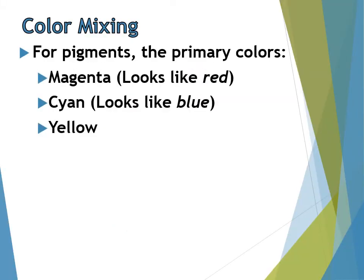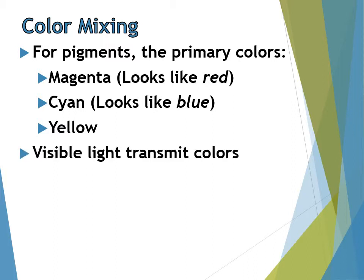For pigments, the three primary colors are magenta, cyan, and yellow — which were the secondary colors of visible light. That's because pigments absorb light and reflect what's left over. Magenta and cyan look a lot like red and blue in pigments, so they're often called red and blue — but they are technically magenta and cyan. Yellow is the third primary color of pigments. Visible light transmits colors while pigments absorb colors and reflect what's left over.